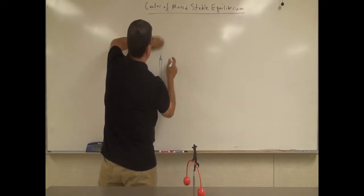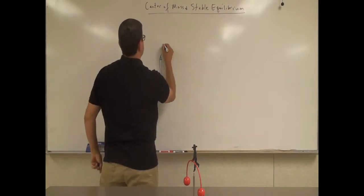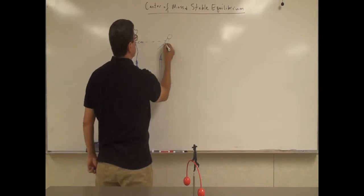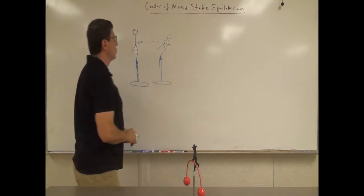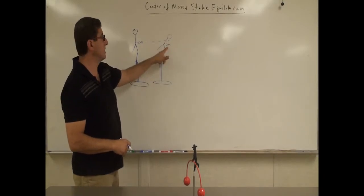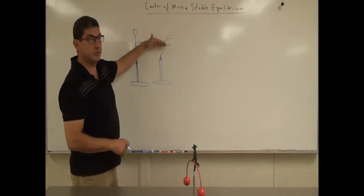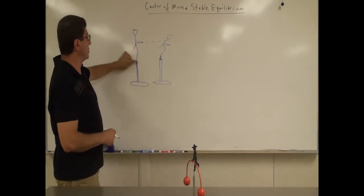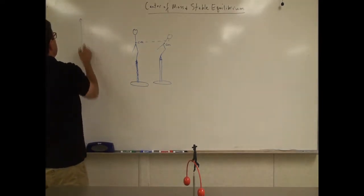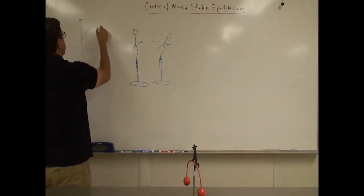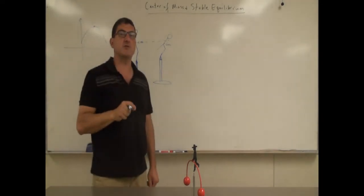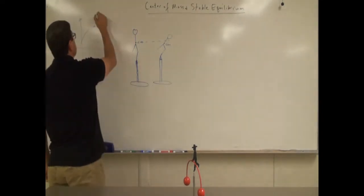Let's say I displaced it a tad bit more. Their center of mass, which used to be here, is now going to be here. By rotating it, the center of mass of the system has gone below the original point. That means this point would be a point of maximum potential energy, so it gives you unstable equilibrium.